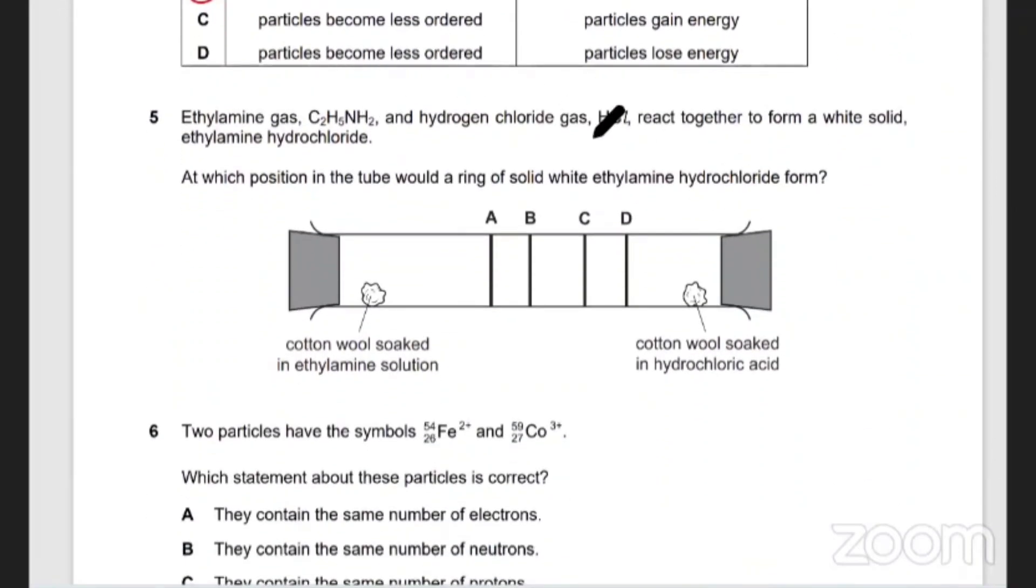Okay, let's move on. Ethylamine and hydrogen chloride can react together to form a white solid. Let's move on one second.